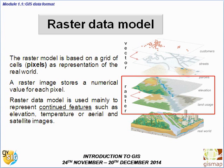The raster data model is based on a grid of cells called pixels that make a representation of the real world, and a raster image stores numeric values for each pixel. The raster data model is used mainly to represent continuous features such as elevation, temperature or satellite images.